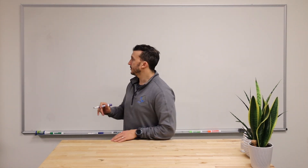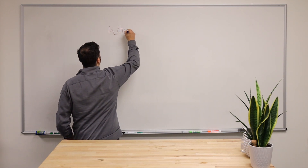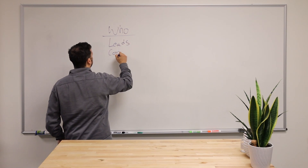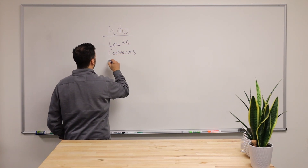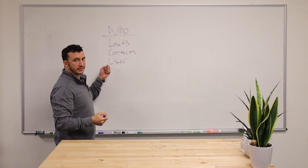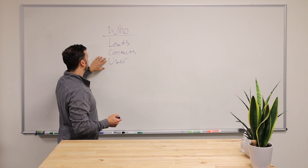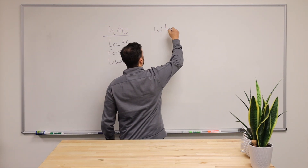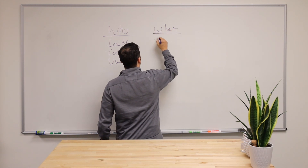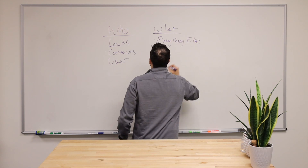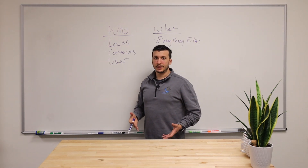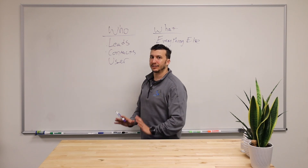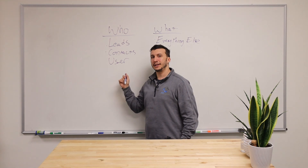To summarize briefly: a who consists of leads, contacts, and often users — even though users are setup objects, they can in many cases be thought of as a who. Mainly we're talking about leads and contacts. A what is everything else — so all of your custom objects are what's. Every custom object you make is a what; you cannot create a custom who object.